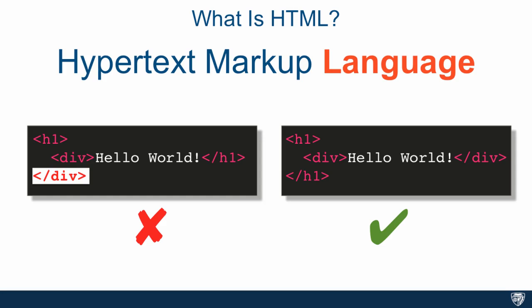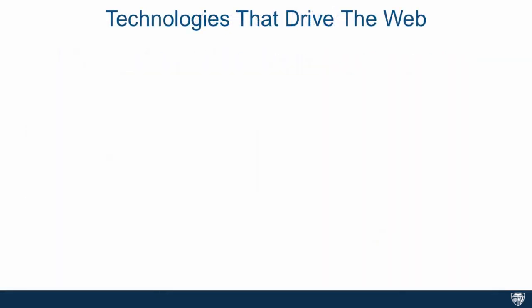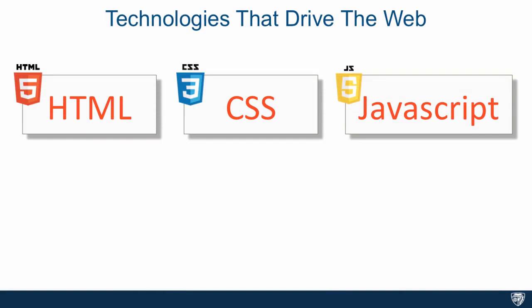HTML also has its own semantics, which means tag names can mean something either to machines or to humans. Now let's talk about the three technologies that drive the web. Each one has its own distinctive purpose and all three fit very nicely together. HTML provides the structure — meaning what components does the HTML document have. For example, it can have one heading, two paragraphs, and a footer. That does not tell you anything about how these components are visually laid out, what color they are, or what font size they are — only what the components are. Like a house with three rooms and a kitchen: you know what components make up the house, but not what color the walls are.